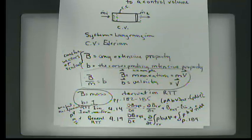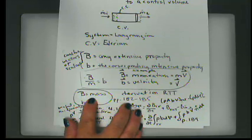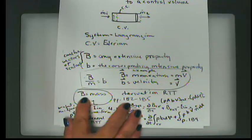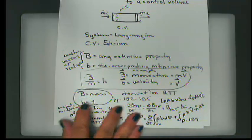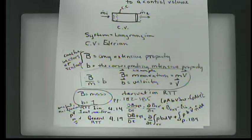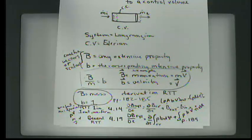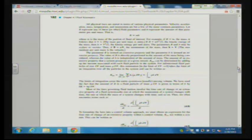Continuing with that, if capital B is equal to mass, then small b is equal to mass divided by mass, which is just 1. The derivation of Reynolds transport theorem is in your textbook on pages 182 to 185. We reference capital B equals mass times little b, then take a limit and have a differential equation where we're taking a differential of volume — del-V with a bar through it designating volume — times density times little b.